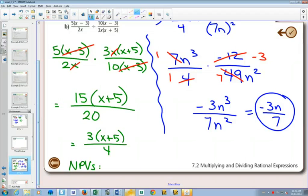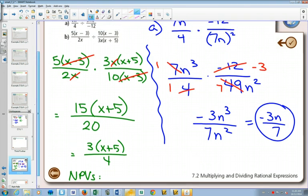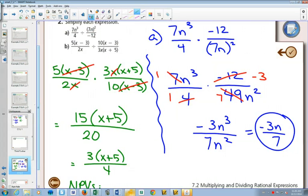If I asked this on a test, I would also say, can you state the non-permissible values for the question? So if I said, what are the non-permissible values for part B? What we would look at is you know that you're not allowed to divide by 0 anywhere.